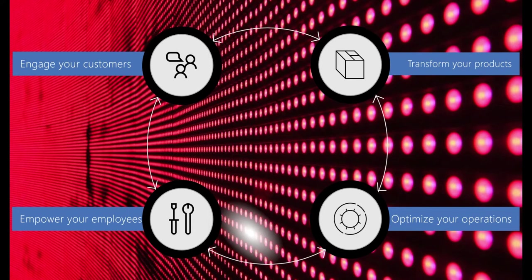What we mean by digital transformation is the transformation of processes from manual, paper-based, to digital. That means that as a company, you have a product, but now you also have digital processes. So your customers and your employees are now users of your system — they interact with your digital processes. That means you now have telemetry on the interaction of your customers and employees with your system.